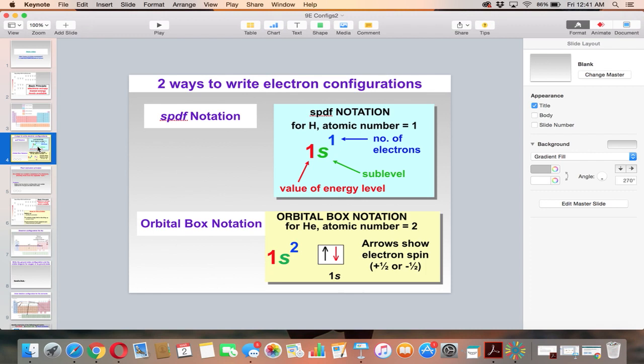To look at both types of methods of representing electrons, there's the electron configuration where you just write it horizontally and you say 1 for the value of the energy level or how close it is to the nucleus. 1 means it's very close, as close as it can get. S is the sublevel, meaning it's spherically shaped. And the superscript is the number of electrons.